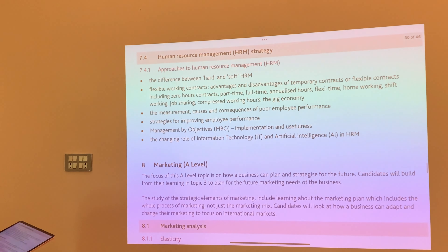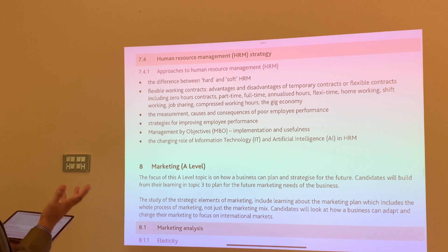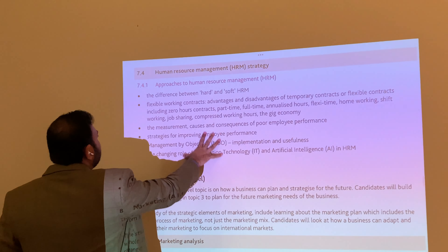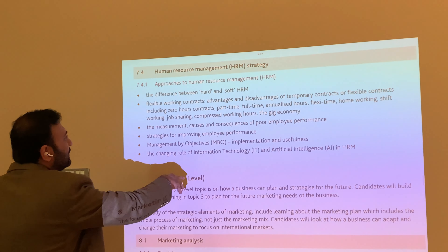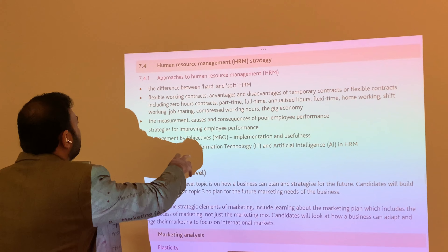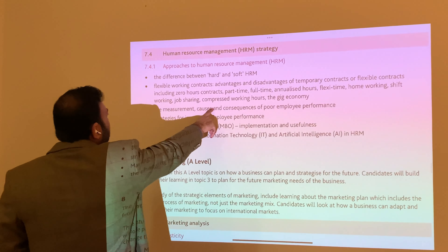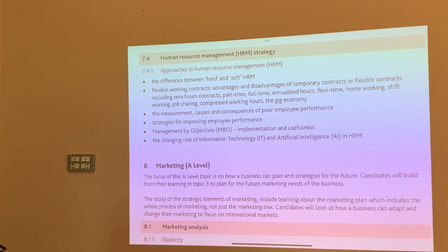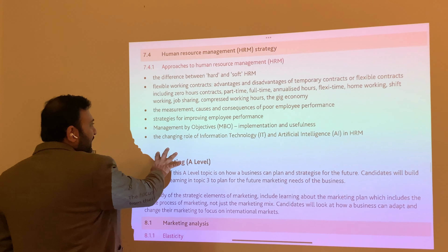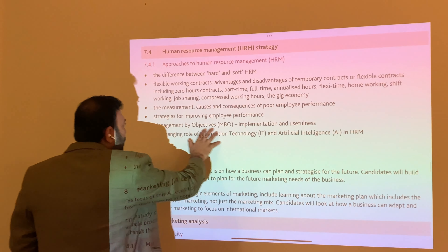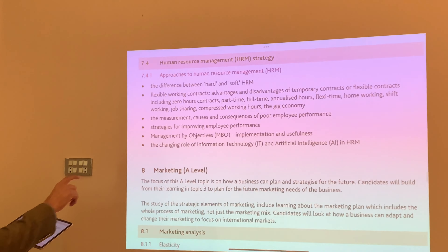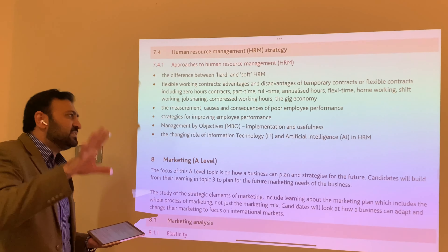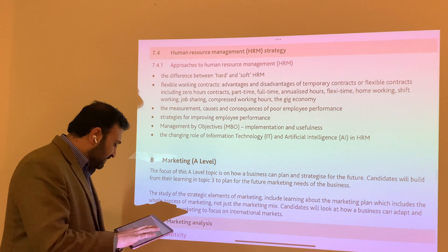The last chapter of section number 7 is human resource strategy, where we have been already teaching the difference between hard and soft nature and flexible working contracts. Strategies for improvement of employees' performance, different types of contract shifts, job sharing, contract working hours, and the gig economy. The changing roles of information technology and artificial intelligence in HR — this is the new thing that has been added to the syllabus. The role of artificial intelligence in the syllabus is increasing, so we should be especially focusing on that.